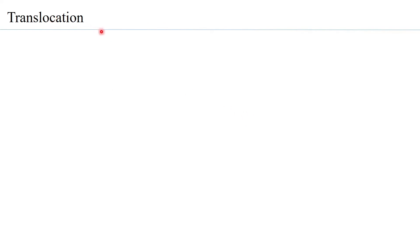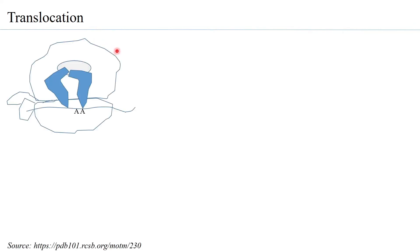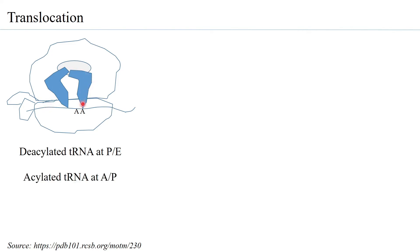The next step after peptide bond formation is translocation. Once the peptide bond is formed at the peptidyl transferase center, the initiated tRNA at the P site tilts toward the E site — it is now deacylated, carrying no amino acid or peptide. It is partially on the E side and partially on the P side. Meanwhile, the aminoacyl tRNA that was at the A site is now partially on the P side and partially on the A side, so both tRNAs are already moving toward their next locations.